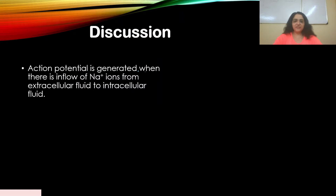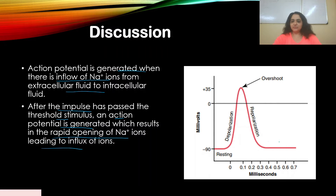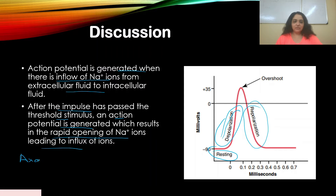Action potential is generated when there is an inflow of sodium ions from extracellular fluid to intracellular fluid, after the impulse has passed the threshold stimulus. This results in the rapid opening of sodium ion channels. At the axon hillock, enough stimulus must be provided for the impulse to move forward.